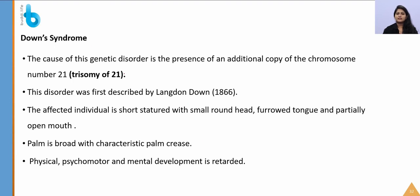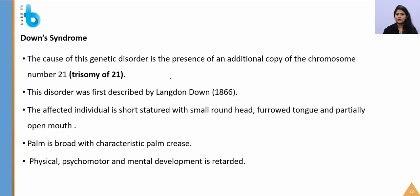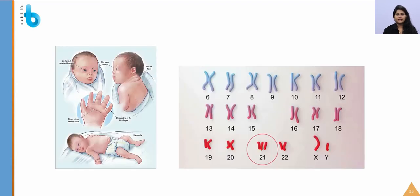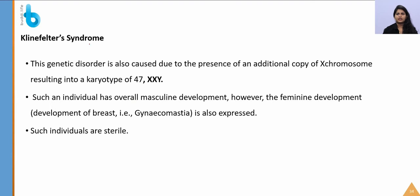Down syndrome is caused by trisomy of chromosome 21 — instead of a pair, there are three copies of chromosome 21. It was first described by Langdon Down in 1866. Symptoms include short stature, small round head, furrowed tongue, partially open mouth, broad palm with characteristic palm crease, and mental retardation.